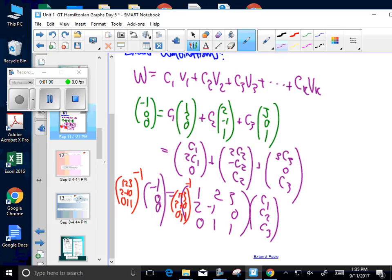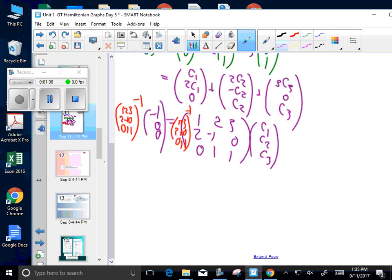And then what will happen to this thing? These two multiply will be the identity matrix. And this will be my answer for C1, C2, and C3.